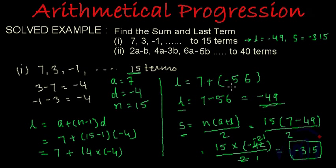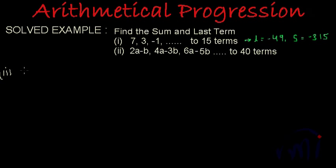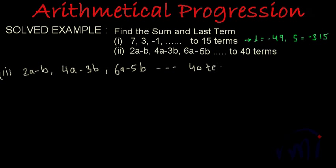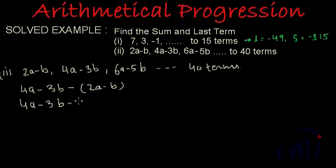The second pattern has first term 2a minus b, second term 4a minus 3b, and third term 6a minus 5b, continuing till 40 terms. First we check whether this is an arithmetical progression. Subtracting the first term from the second term: (4a minus 3b) minus (2a minus b) becomes 4a minus 3b minus 2a plus b, which equals 2a minus 2b.